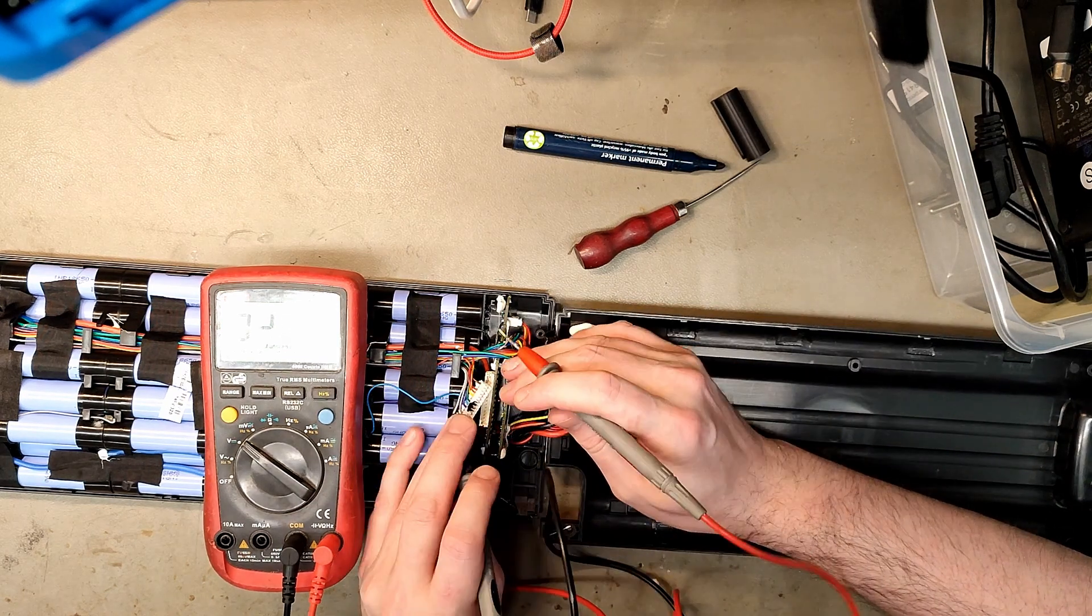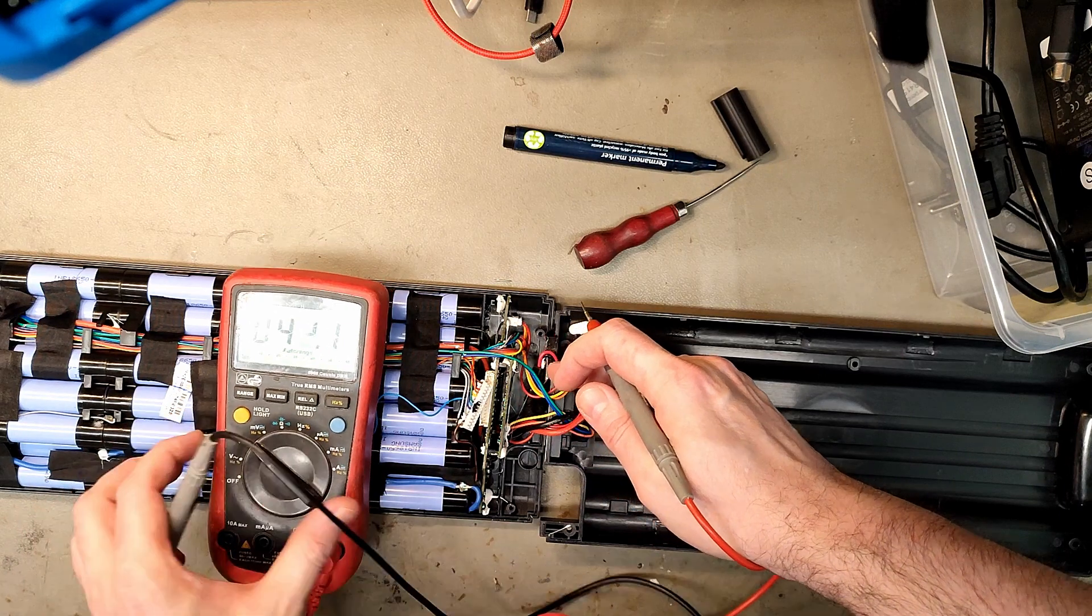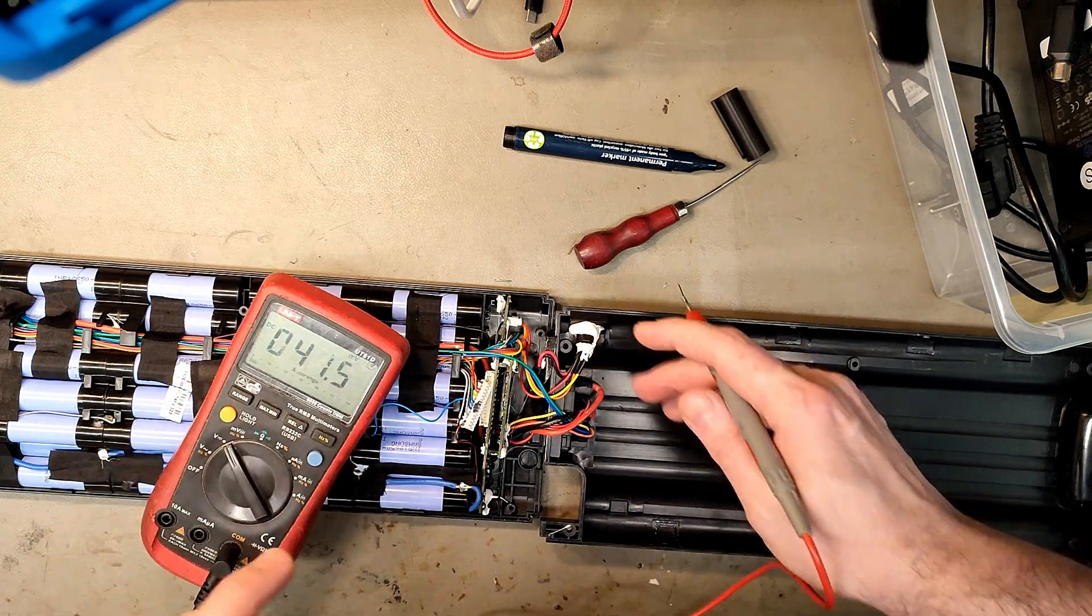I do marking so I know which cell groups are bad. Can you see the multimeter? I want you to have a look at this.